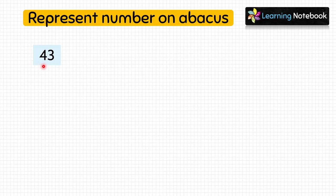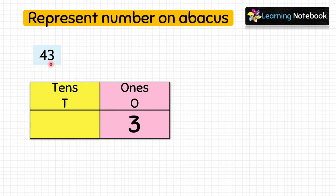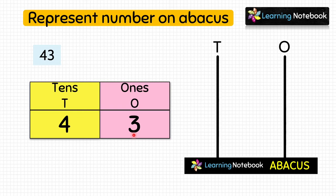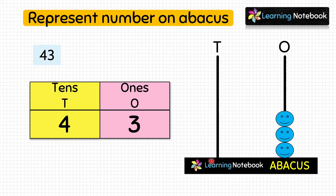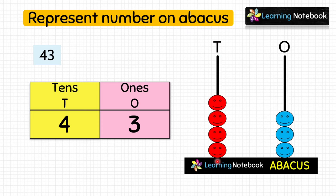The first number to represent is 43. The digit at the ones place is 3 and the digit at the tens place is 4. So we will put 3 beads at the ones place on the abacus: 1, 2, 3. Now we put 4 beads at the tens place: 1, 2, 3, 4. In this way we have put 4 beads at the tens place and 3 beads at the ones place, representing 43 on the abacus.